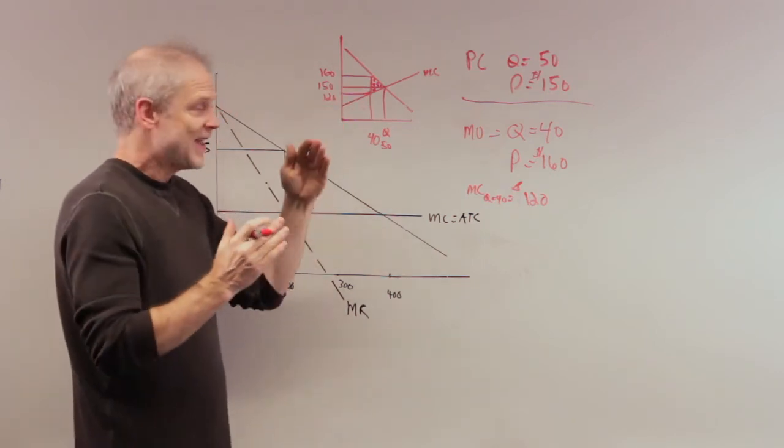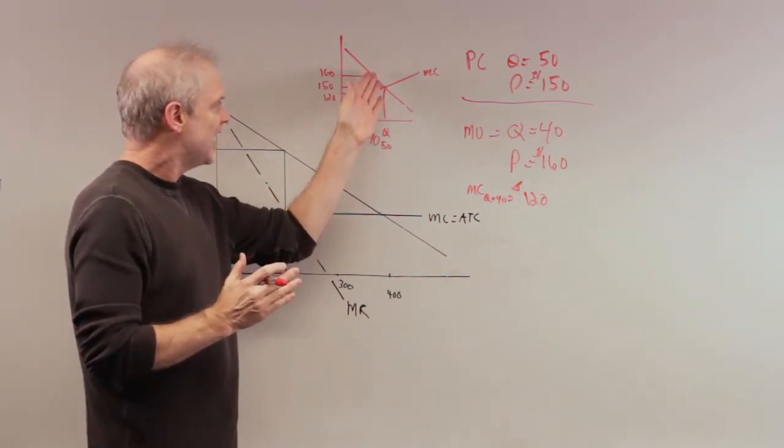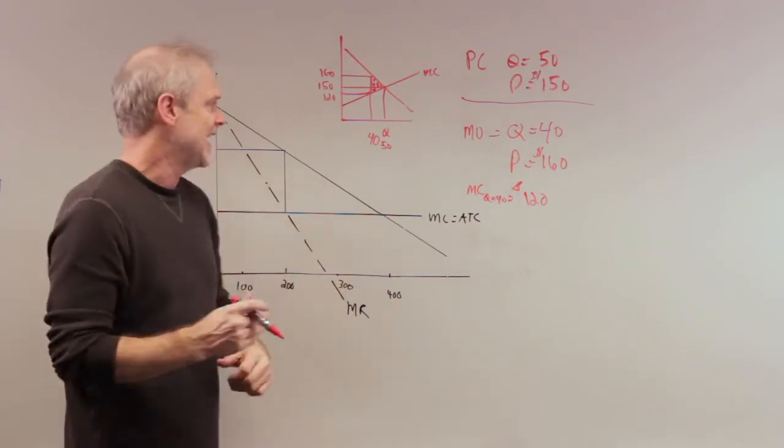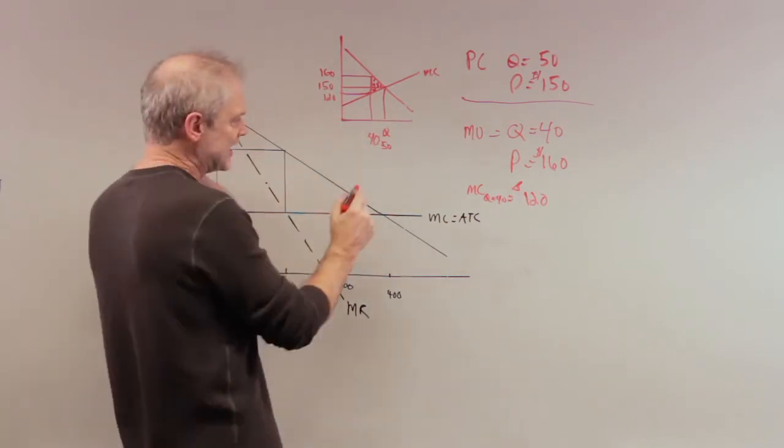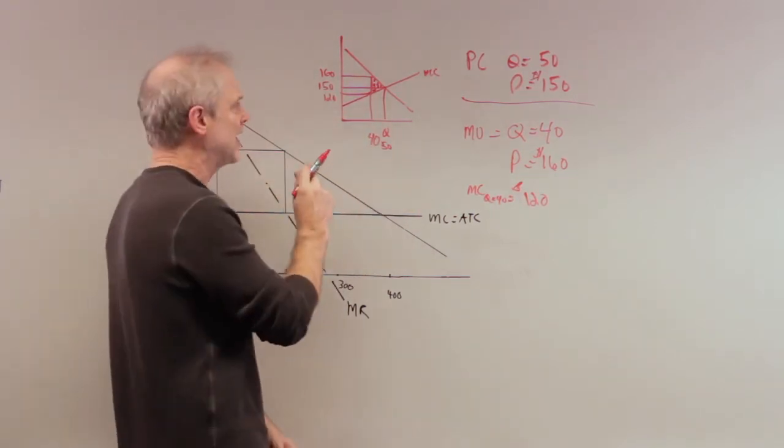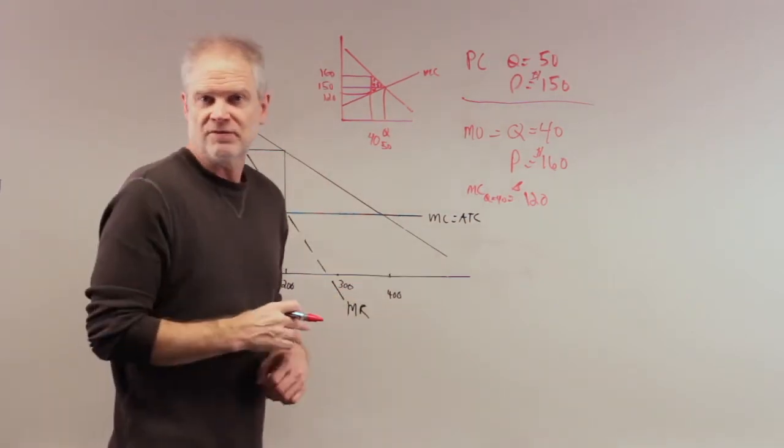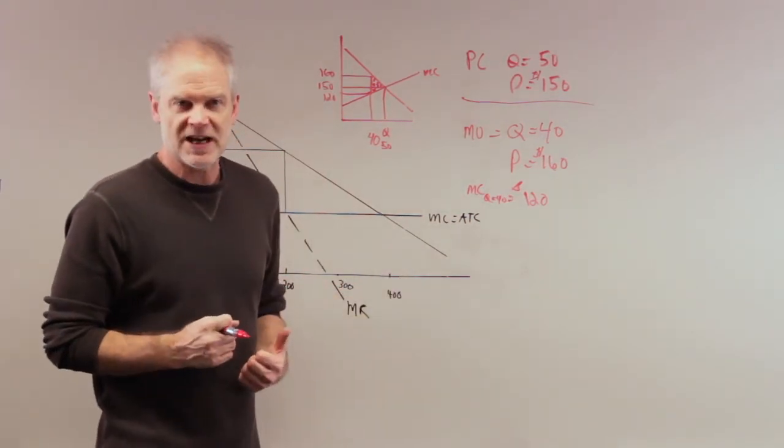In other words, that's a gain to both people, to both society and to the purchaser, that's a gain. All those are lost because monopolists cut back output and raise price in its own best interest, which is obviously to maximize profits.